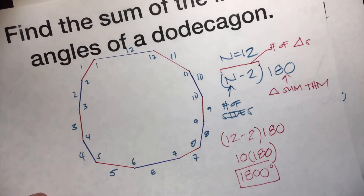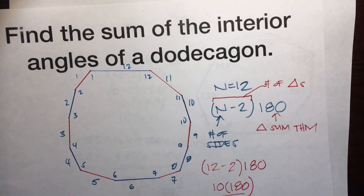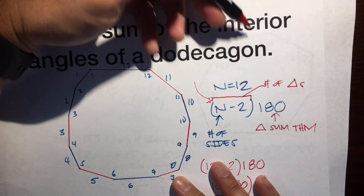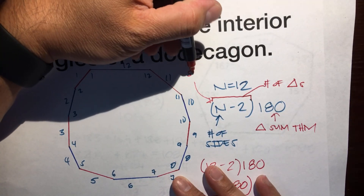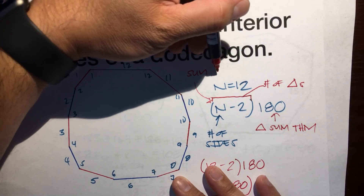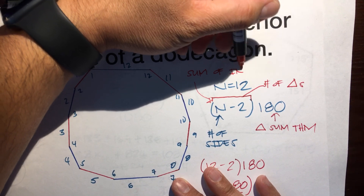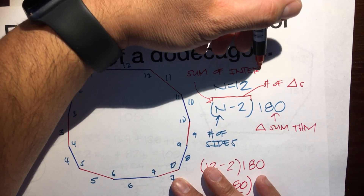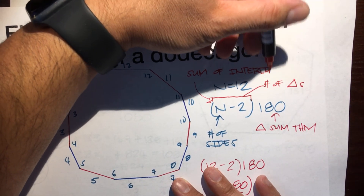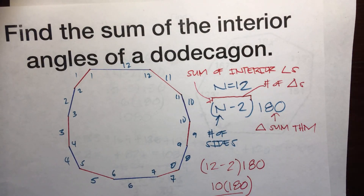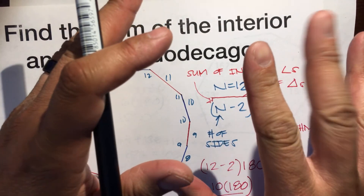So the formula is (n minus 2) times 180, and this is called the sum of interior angles formula. Hope that helps. Have a great day.